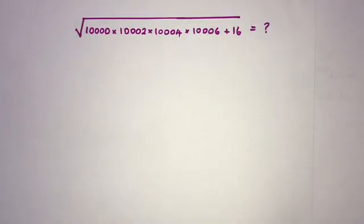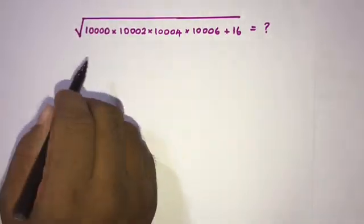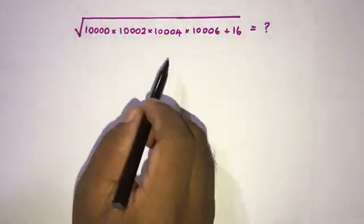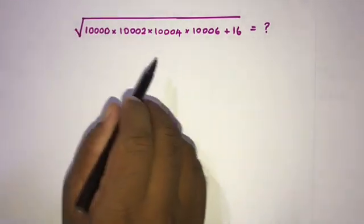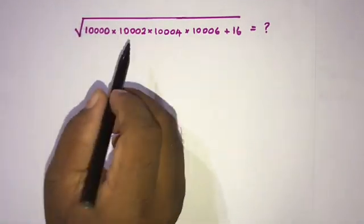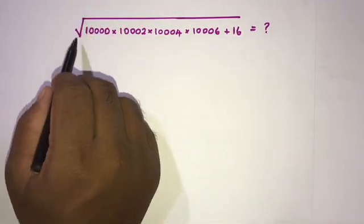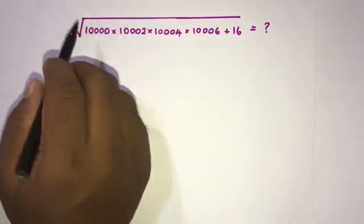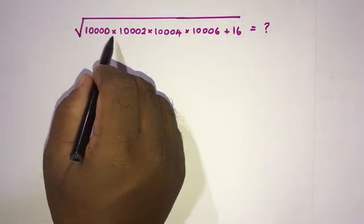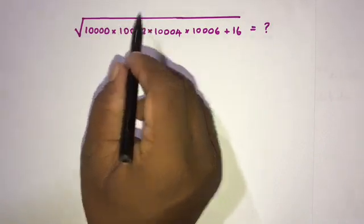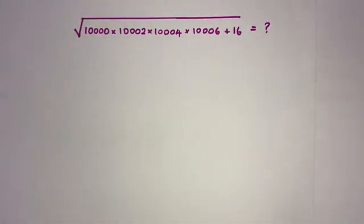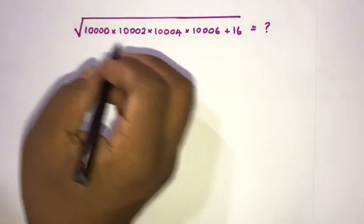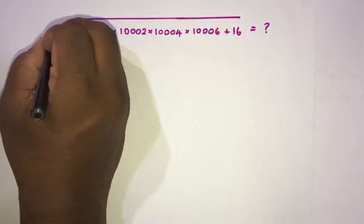Welcome to the Mathematics My Channel. Today we are going to solve another interesting question from the Hong Kong Mathematical Olympiad 2021 paper — question number seven. Without using a calculator, we should evaluate the value of this expression: the square root of 10000 times 10002 times 10004 times 10006, plus 16.